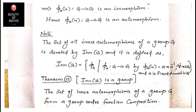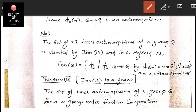The set of all inner automorphisms of a group G is denoted by Inn(G). Inn(G) = {φ_a | a ∈ G}, where each φ_a is defined by φ_a(x) = axa⁻¹ and a is a fixed element in G. The collection of all such inner automorphisms forms Inn(G).